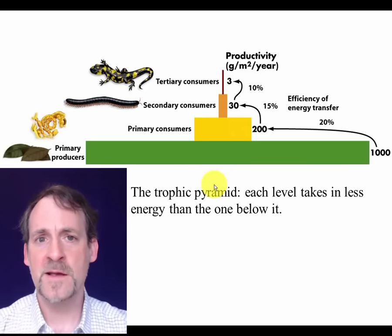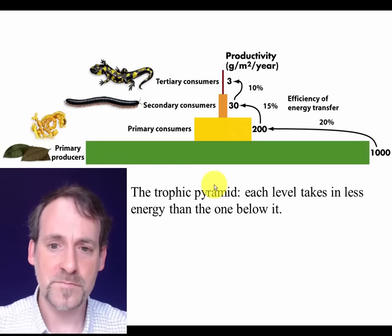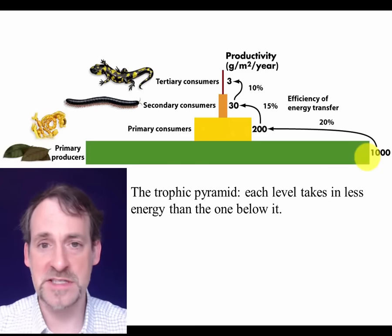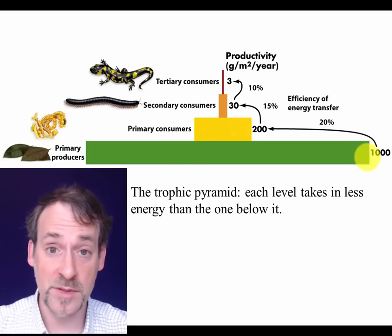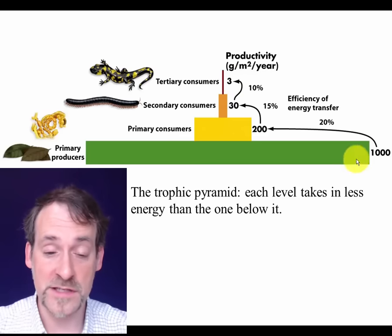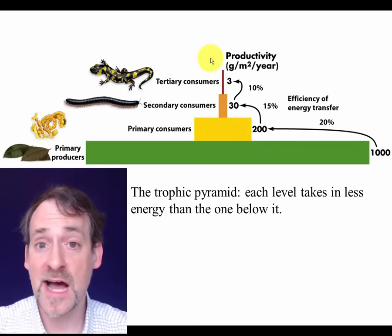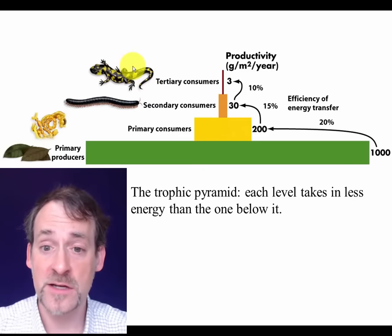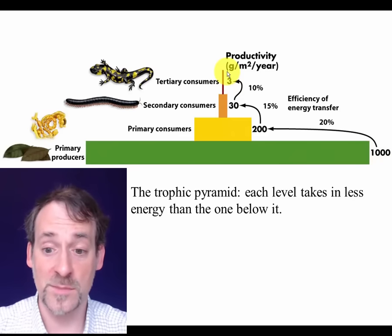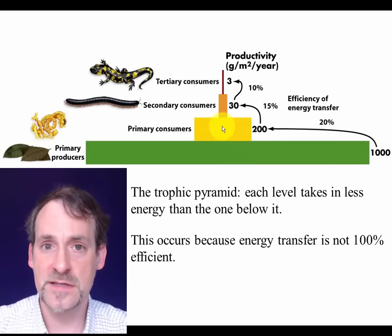Because of all these losses, you get a pattern called a trophic pyramid. The efficiency of energy transfer up a food chain is only somewhere between 10 and 20% at any particular step. So every step up the food chain, you're losing maybe four-fifths or nine-tenths of the energy from the trophic level below. The upshot is that when you get high up to tertiary consumers like a salamander, very little of the energy captured by primary producers ever makes it that far up the food chain — because energy transfer between trophic levels is very inefficient.